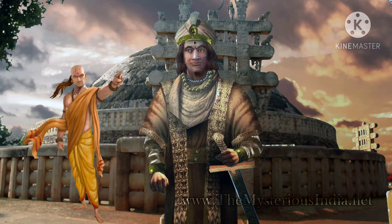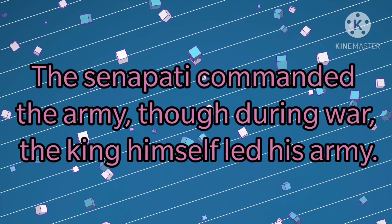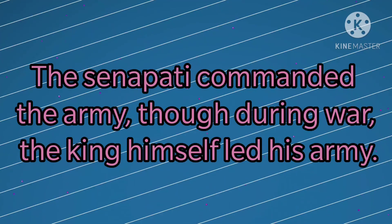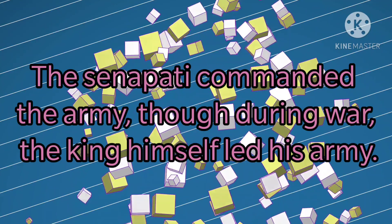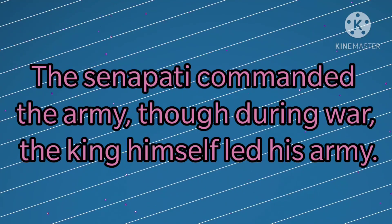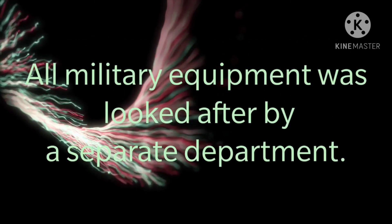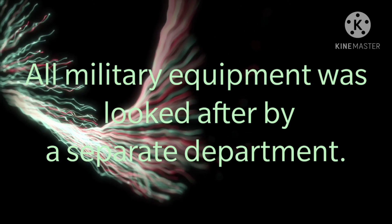There was also a very efficient spy system having a large number of spies, many of whom were women. These spies were stationed at different parts of the kingdom and kept the king informed of all developments within and outside the kingdom. The Senapati commanded the army, though during wars the king himself led his army. The soldiers were equipped with bows and arrows, swords, armours, and shields.